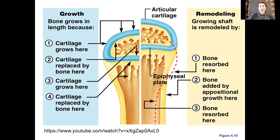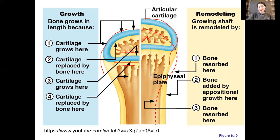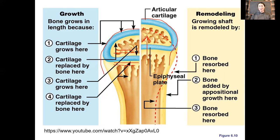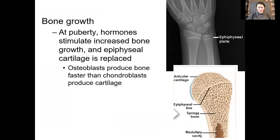Over time, a bone that was this long is now going to have built more cartilage on the epiphyseal side, while replacing cartilage on the diaphyseal side. The entire epiphysis moves up — we are essentially lengthening the diaphysis, pushing the epiphysis farther and farther away. This is happening in both directions simultaneously: you have two epiphyseal plates in each of your long bones. It's a game of cat and mouse — chondroblasts are building cartilage while osteoblasts are replacing it down the shaft.